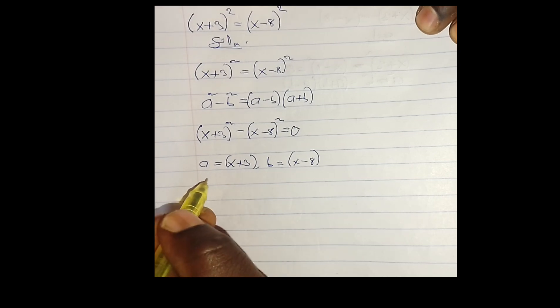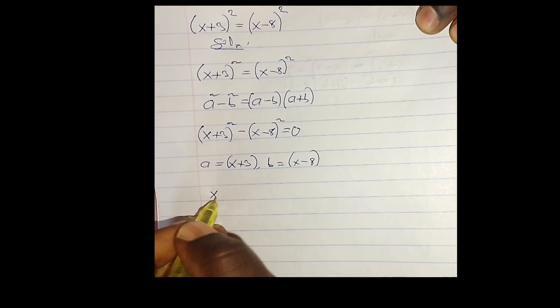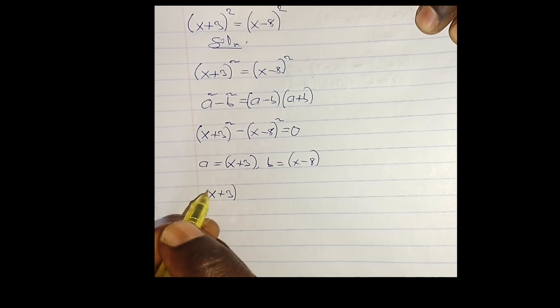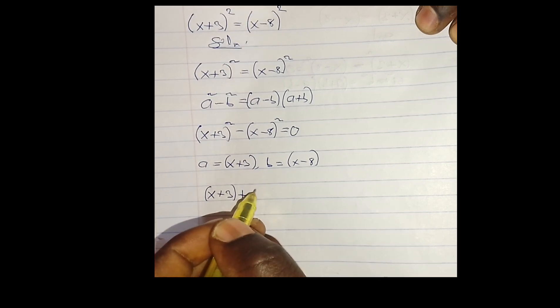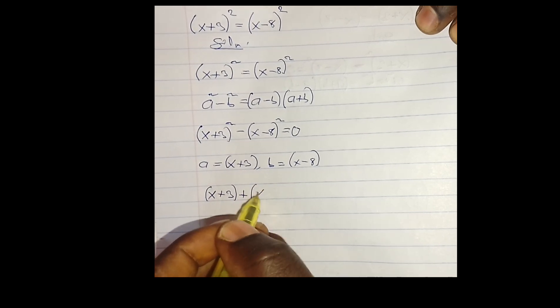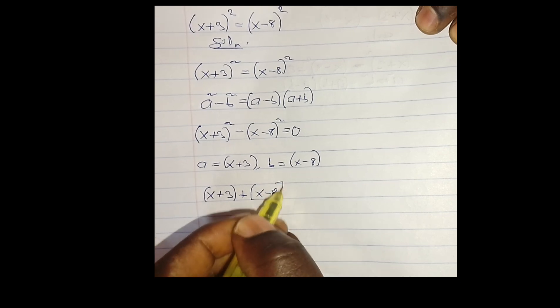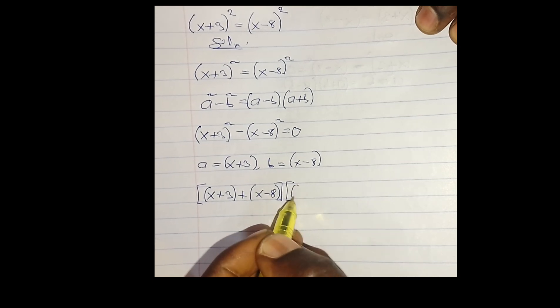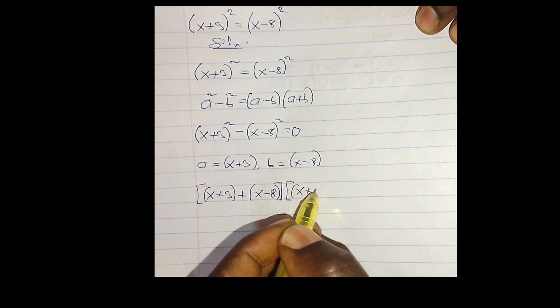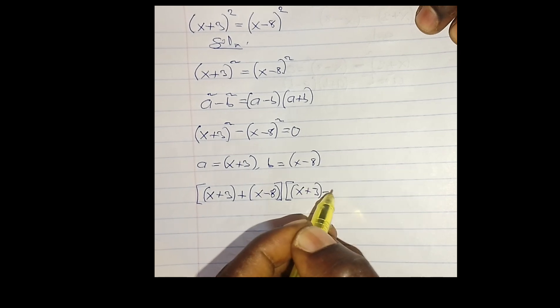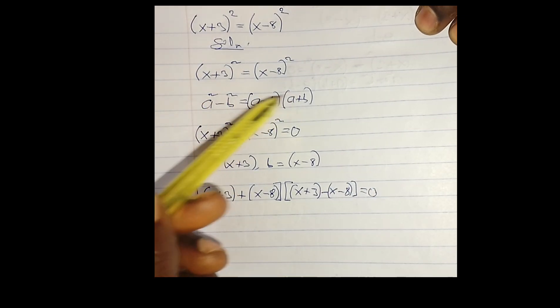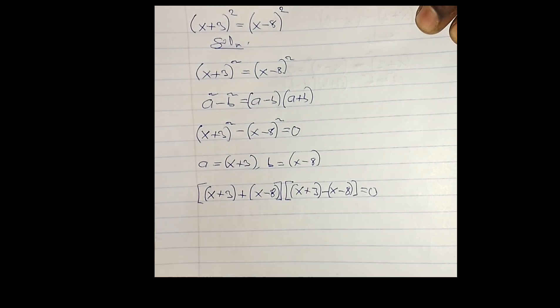We are going to have (x + 3) plus (x - 8) times (x + 3) minus (x - 8) equals 0. That means based on this, going further...